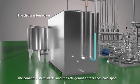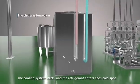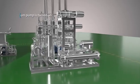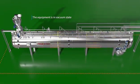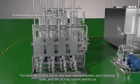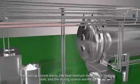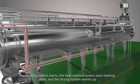The cooling system starts and the refrigerant enters each cold spot. The vacuum system starts and the main body is pre-evacuated. The heating system starts. The heat medium enters each heating zone and the drying system warms up.